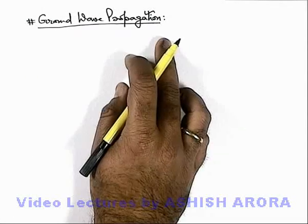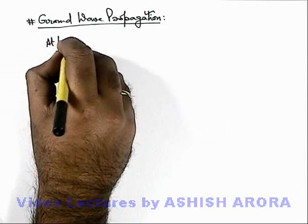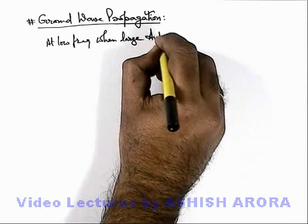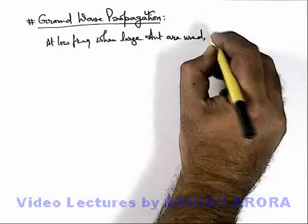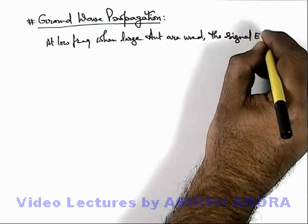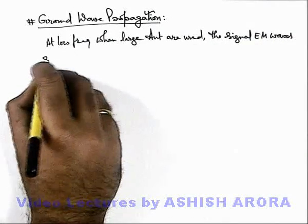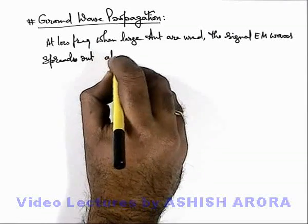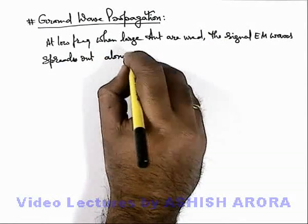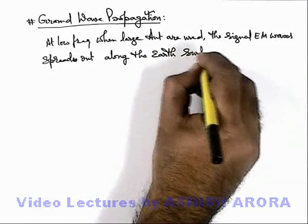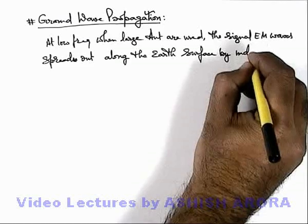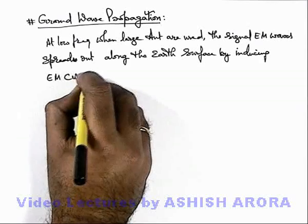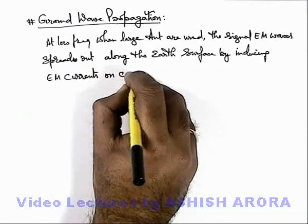Let us discuss ground wave propagation. At low frequencies, when large antennas are used, the signal electromagnetic waves spread out from the antenna along the earth's surface, by inducing electromagnetic currents on earth's surface.